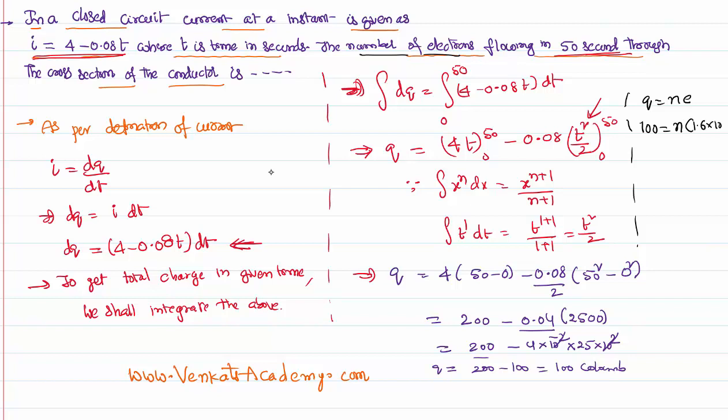We know charge of each electron is 1.6 × 10^(-19) coulombs. That implies number of electrons involved in this process is 100 by 1.6 × 10^(-19). We know 100 by 1.6 × 10^(-19) is 6.25 × 10^18.